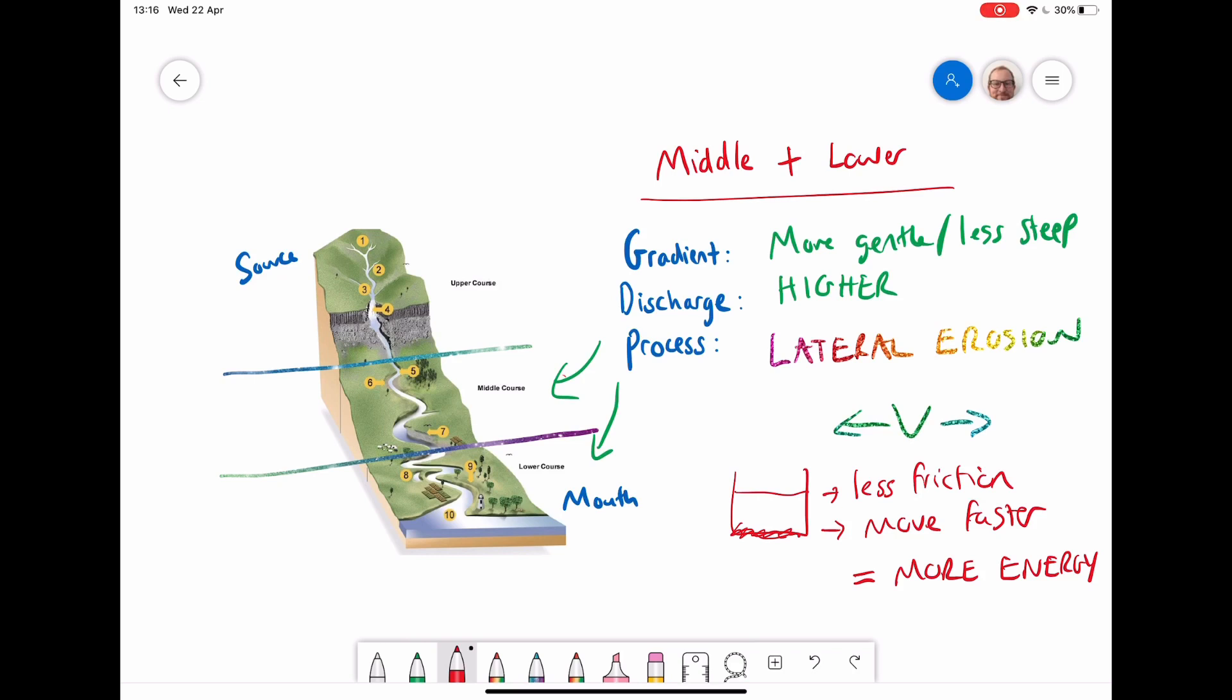And also because the gradient is less steep, gravity isn't having a bigger effect. So the vertical erosion will still happen, but to a lesser degree, where all of the energy now is pushed out into those sides.